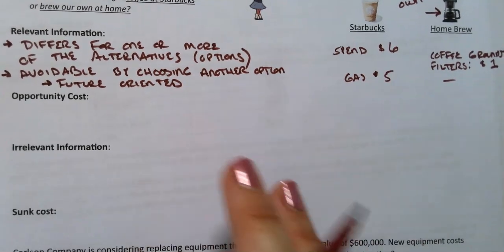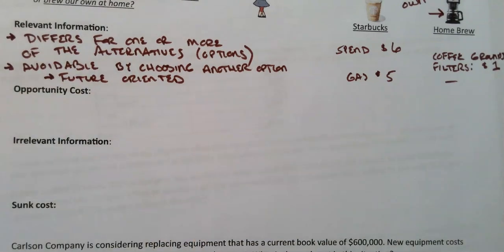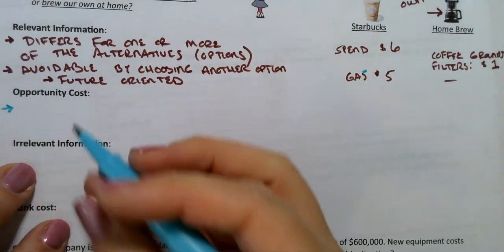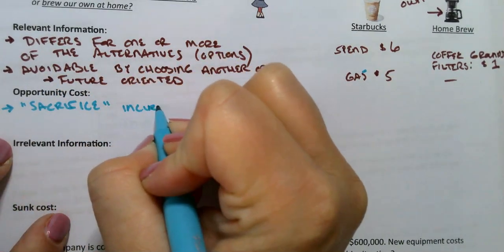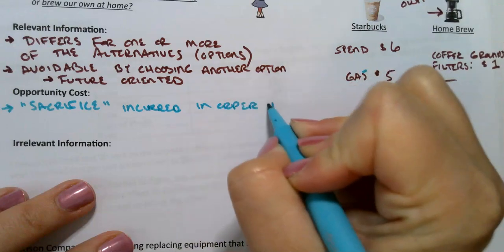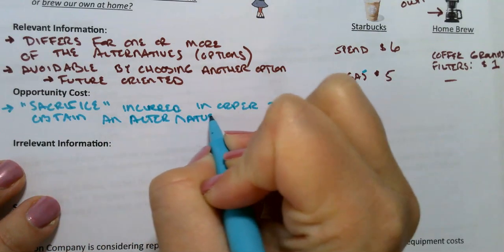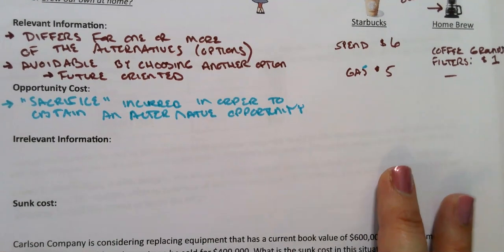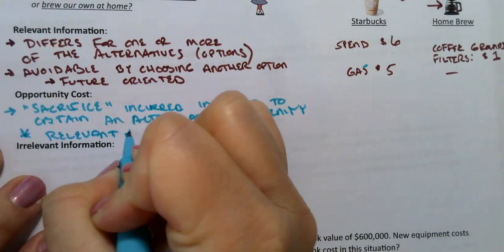When we talk about relevant information, we also come to opportunity costs — you may have heard this in economics or intro to business. Opportunity costs are those sacrifices you give up to choose one option over the other — the sacrifice incurred in order to obtain an alternative opportunity. What are you giving up to take one option over the other? This is relevant and must be considered as we work through our examples.